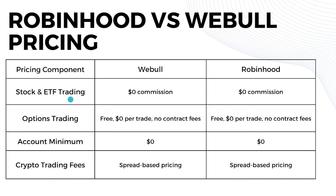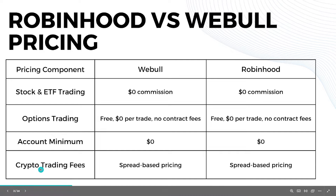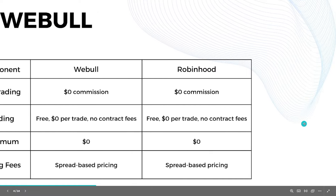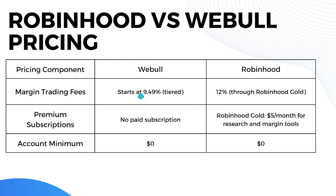Now let's go to pricing. For stocks and ETF trading, both Webull and Robinhood have zero dollar commission. For options trading, it's the same — zero dollars per trade with no contract fees, and no account minimum. For crypto trading, both platforms use spread-based pricing. For margin trading fees, Webull starts at 9.49% in a tiered structure, while Robinhood starts from 12% through Robinhood Gold.